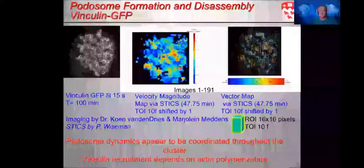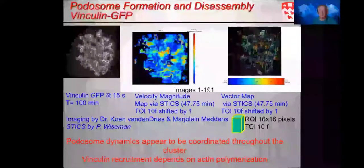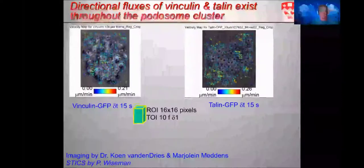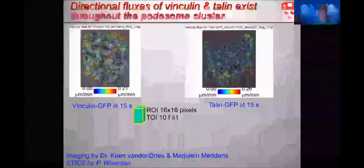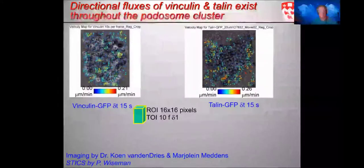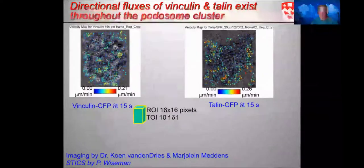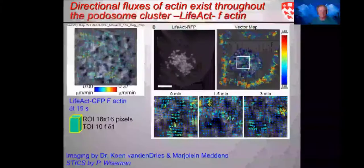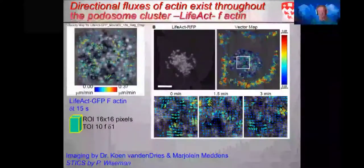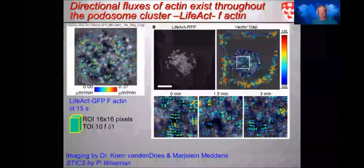I went and did STICS analysis on the data from these types of measurements. You can see, in terms of the vector maps, that there was sort of like flow patterns, which showed up in coordination with the assembly and disassembly of these structures. This is regions of interest. Every vector is a region of interest, 16 by 16 pixels, a 10 frame window iterated through the time series. We saw the same patterns in terms of vinculin, as well as talin. Not too surprising, given that they're both involved in the ring structure, the linking to the integrin. However, we also saw similar patterns with the actin. This is now imaging of lifeact GFP and the space-time image correlation of that.